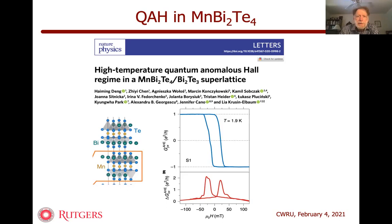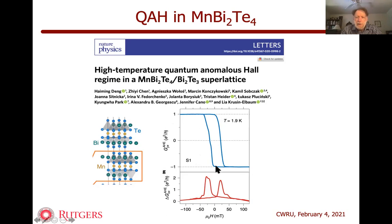A more recent development is this manganese bismuth telluride system where people have demonstrated the quantum anomalous Hall effect at 2 Kelvin. The vertical axis is the transverse conductivity in units of e² over h, and you see that it's very well quantized to one. The horizontal axis is an applied magnetic field, so you're actually switching the ferromagnetism from up to down over this hysteresis loop. Once you return the system back to zero magnetic field, you're very close to the quantized condition. This type of hysteresis loop has to do with domains forming and moving.